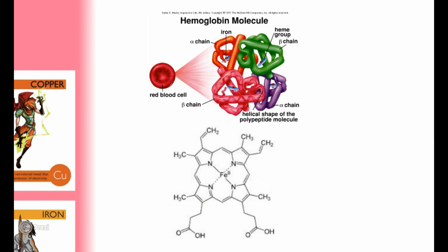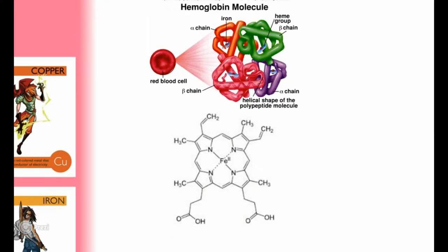This is what the heme actually looks like on a molecular level — iron is right in the middle. Remove that iron molecule and everything falls apart. Interestingly, chlorophyll looks just like that, except instead of iron in the middle, it's magnesium. If you remove the magnesium out of the chlorophyll, the leaf starts turning from green to brown — that's why leaves actually brown.